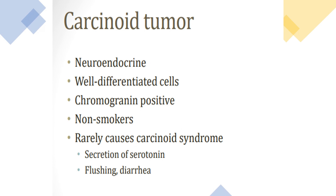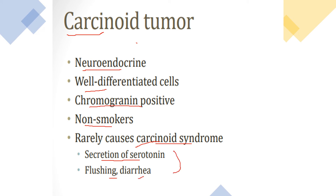Carcinoid tumor is the last type in the non-small cell group. It arises from neuroendocrine cells and is well-differentiated, unlike small cell carcinoma which shares the same neuroendocrine origin but is poorly differentiated. It is chromogranin-positive, a feature of all neuroendocrine tumors. It is common in non-smokers and rarely presents as carcinoid syndrome, which involves serotonin secretion and flushing — that is more common in GIT tumors than in lung carcinoid.